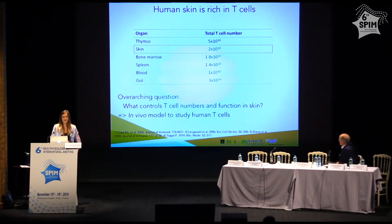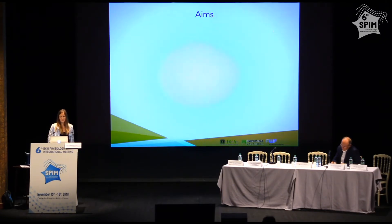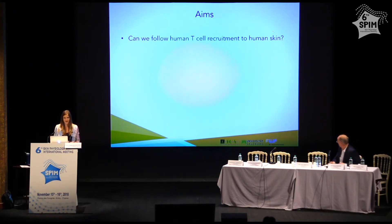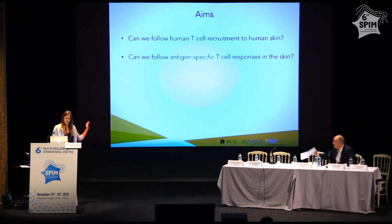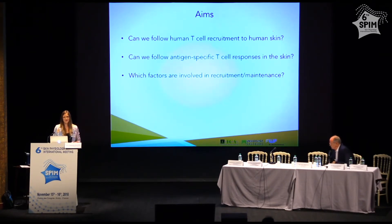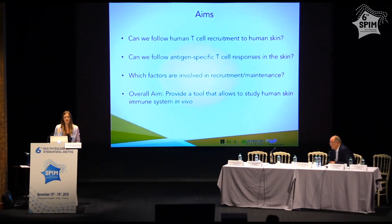I set out to develop a humanized mouse model to study human skin in vivo. When establishing the model, I had several aims in mind. First, we wanted to follow human T cell recruitment to human skin tissue in steady state — in the absence of inflammation. Furthermore, we wanted to see if we can elicit and follow antigen-specific T cell responses in this tissue. We also wanted to study the contribution of skin tissue itself and factors secreted by the skin to T cell function and maintenance. The overall aim was to provide the scientific community with a tool to study the cutaneous immune system in vivo.